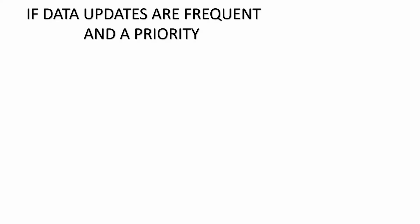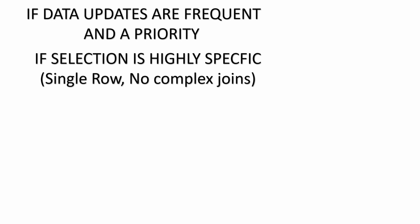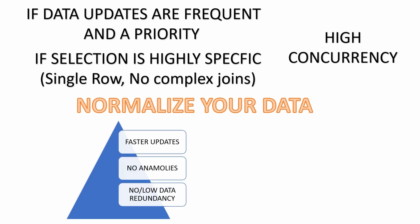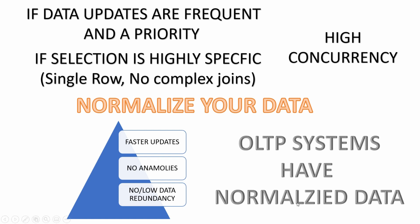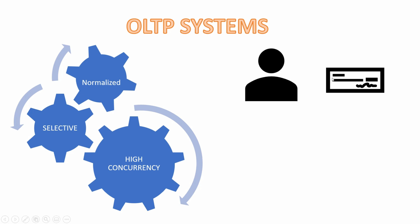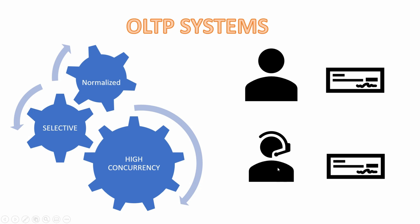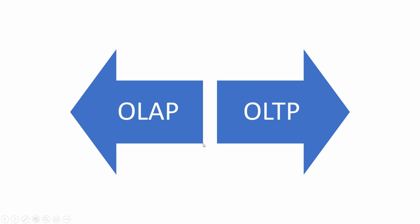To summarize, when should we normalize the data? If data updates are frequent and a priority, if the data selection is highly selective, and if the database is expected to have high concurrency — meaning a large number of users will be accessing the data at the same time — you should go for data normalization. The updates will be faster, there will be no data anomalies, and data redundancy will be minimal. OLTP systems that are used for transactional processing of data are usually highly normalized. These systems are used in parallel by thousands of users and the queries are highly selective — for example, a customer will query only his or her own account.